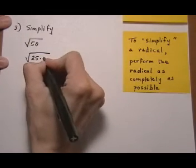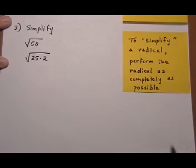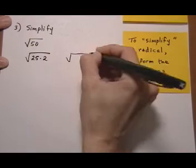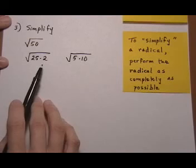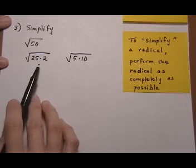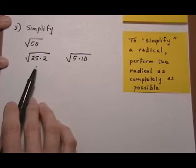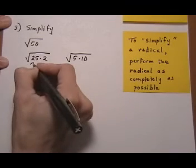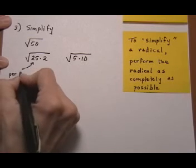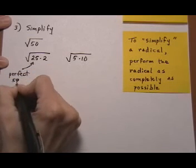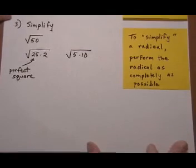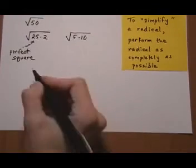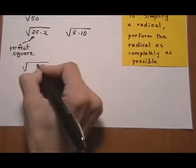50 is made of 25 times 2, or we could look at it as 5 times 10. What you want to do whenever you're simplifying is pick the factoring form that gives you a perfect square. 25 is a perfect square; √25 is 5. So we're going to use that factoring form and use the property where we can break them up under their own radicals to help us finish it.